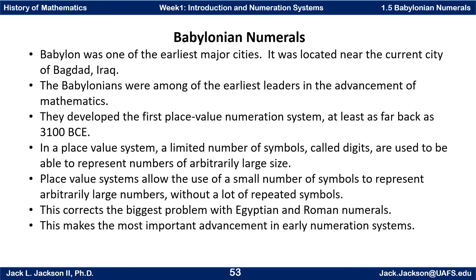They had an early advanced culture and were among the earliest leaders in various advancements of mathematics. But this development of a place-value system was a particularly important development. Place-value systems allow the use of a small number of symbols to represent arbitrarily large numbers without a lot of repeated symbols. This corrects the biggest problem with Egyptian and Roman numerals, making it the most important advancement in early numeration systems.